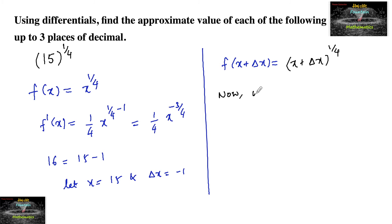Now when x equals 15 and delta x equals minus 1, we have f of x plus delta x equals f of x plus f dash x into delta x. So x plus delta x whole to the power of 1 by 4 equals x to the power of 1 by 4 plus 1 by 4 into x to the power of minus 3 by 4 into delta x.